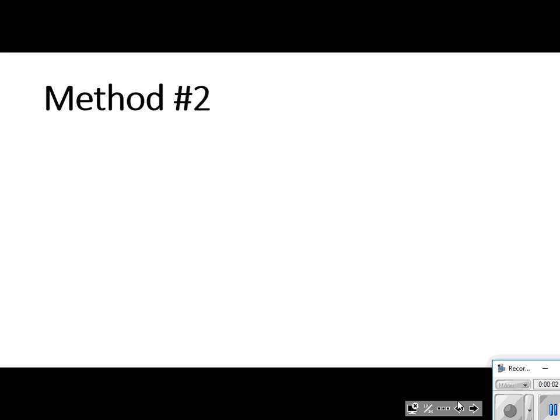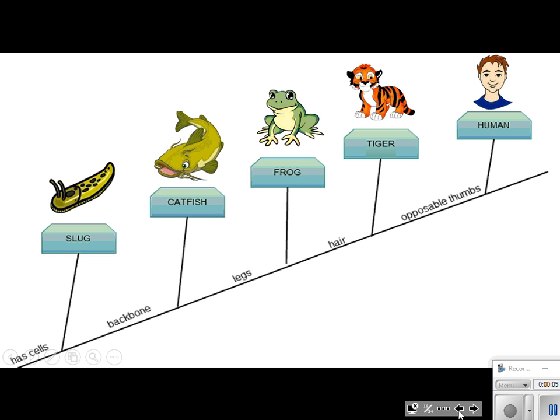If you remember, folks, the first method - this is a picture of the cladogram that we made yesterday, correct? So our first method started out with cells as the one characteristic that every one of these organisms had, went all the way up to opposable thumbs where humans were the only one. So if I look at this, what would you tell me was the difference between a catfish and a tiger? The catfish does not have legs nor does it have hair. The tiger has both of those, correct?